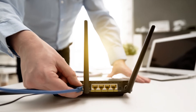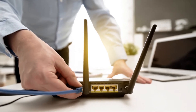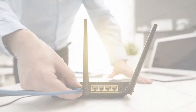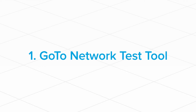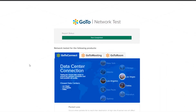Before you try any of them, make sure that you're connected to the same network as your device that is having issues. The first and most recommended method is to download and install the GoToNetwork test tool, which is free to use. You can find direct download links for that tool in the description of this video. After installing the tool, you can either run the test yourself or provide a support rep with the code you'll be given to have them run it for you. We highly recommend using this tool since it checks your system for much more than network stability.